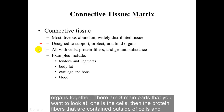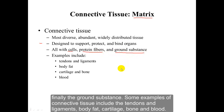There are three main parts to look at: one is the cells, then the protein fibers that are contained outside of the cells, and then the ground substance. Some examples of connective tissue include the tendons and ligaments, body fat, cartilage and bone, and blood.